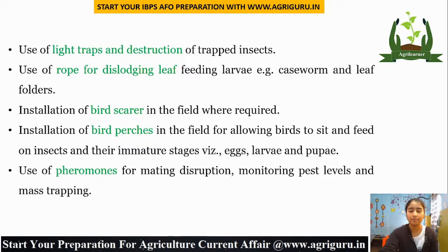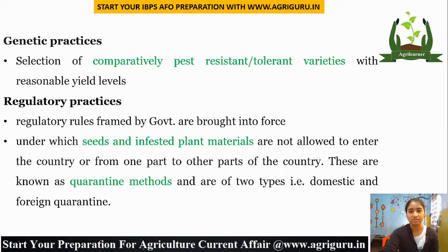Next is Genetic Practices. Under this, selection of comparatively pest-resistant or tolerant varieties with reasonable yield levels is one of the best genetic practices used to control pests.